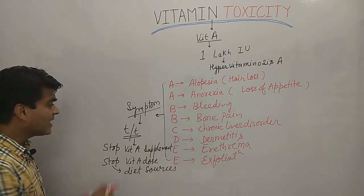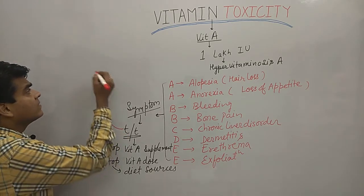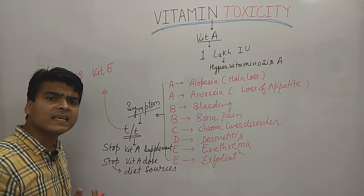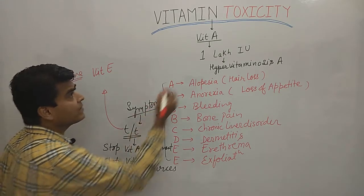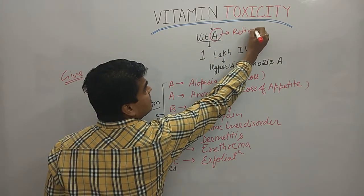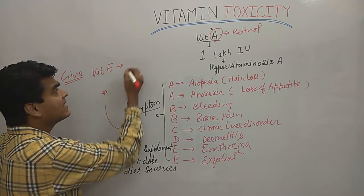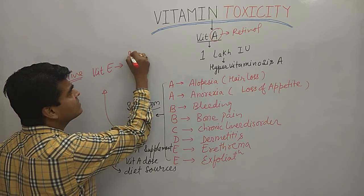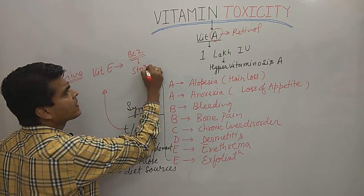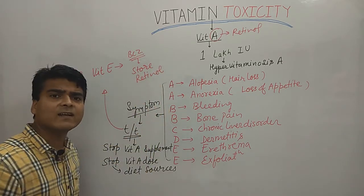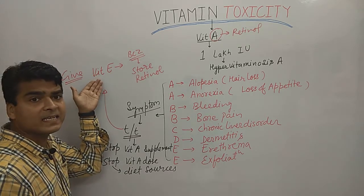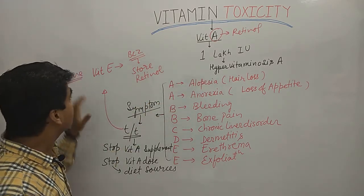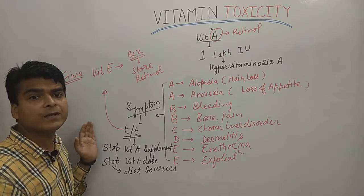We also need to stop dietary sources of Vitamin A. Additionally, an important treatment is to give Vitamin E. Vitamin A is basically retinol, and Vitamin E causes storage of excess retinol. Whatever excess retinol is in the blood can be stored through Vitamin E, thereby reducing hypervitaminosis A.